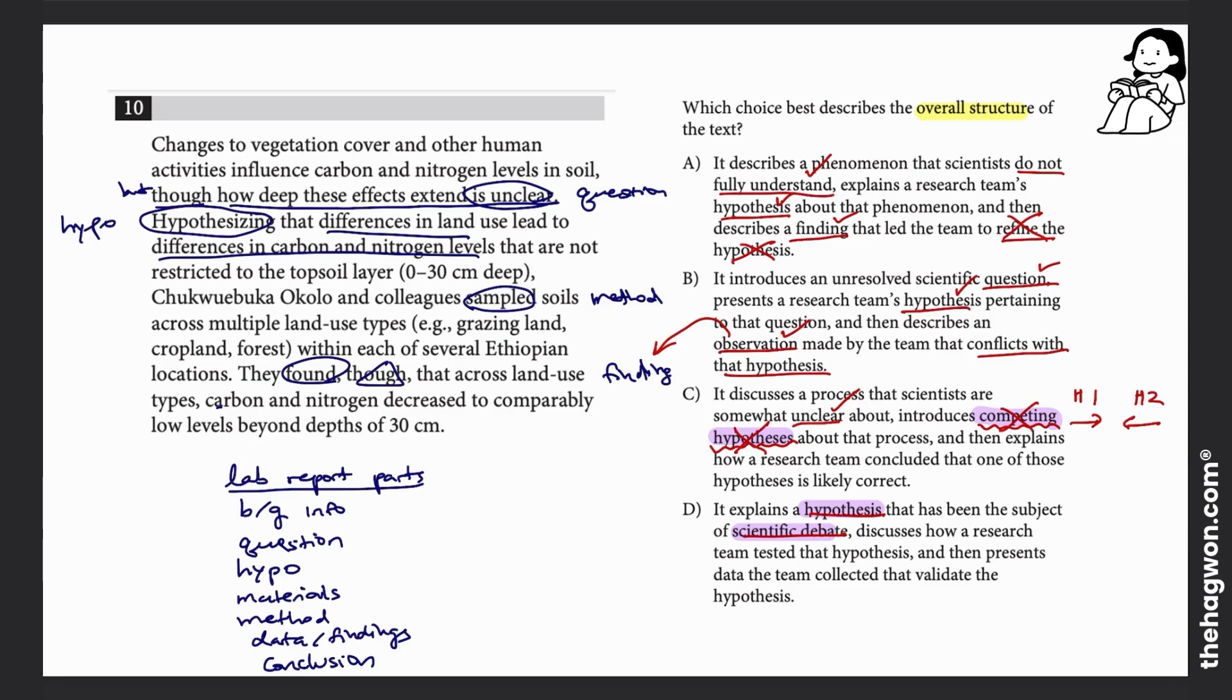So because I know that C and D are incorrect, I know that B is the correct answer. Just to go back and make sure it's super clear though, because it says that the observation conflicts with the hypothesis.